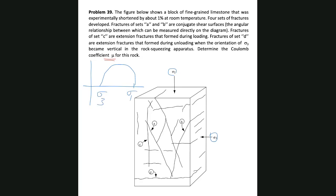Next, we need the theta angle. We have done a few problems, and you know that theta is the angle between sigma 3 and the failure planes, and theta is always between 0 and 90 degrees. The reason I mention this is that you might run into some confusion about which angle to read. The fractures that sigma 3 is bisecting are the conjugate fractures — those are the ones to look at.